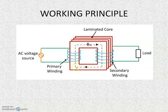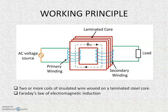When an AC source voltage is applied, it sets up an alternating flux in the primary coil. This flux links to the secondary coil through the laminated magnetic core. By Faraday's law of electromagnetic induction, it induces an EMF or voltage in the secondary coil, and if the circuit is closed, a current will flow in the secondary circuit. This is the basic working principle of a transformer.